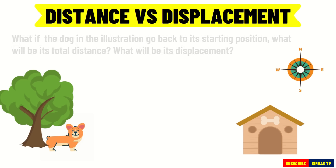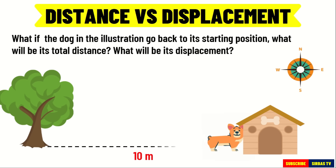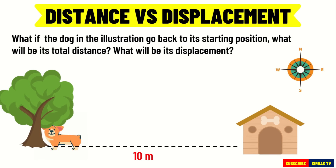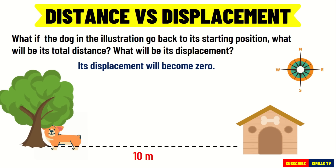What if the dog in the illustration goes back to its starting position? What will be its total distance and what will be its displacement? Its total distance will increase two times or will double, but its displacement will become zero. Why? It is because the starting position of the dog and its final position are the same. Thus, we cannot measure the distance between them.